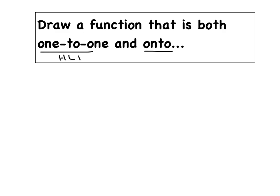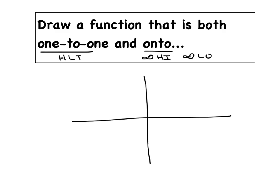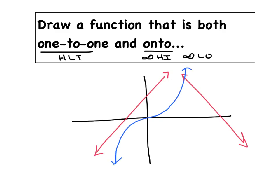Our last challenge: draw a function that is both one-to-one and onto — it must pass the horizontal line test and extend infinitely high and low. Any linear function, whether increasing or decreasing, satisfies both criteria. The x³ graph we drew earlier also qualifies. All three of these example graphs pass the horizontal line test and extend infinitely high and low in both directions. Hopefully you felt good tonight — we'll see you in class tomorrow.